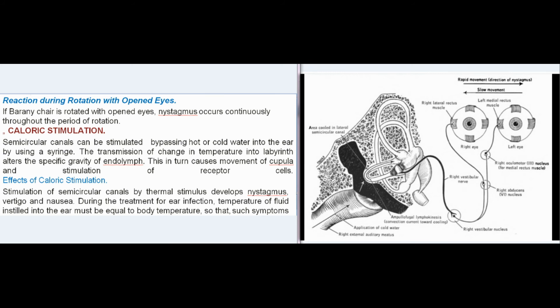Caloric stimulation: semicircular canals can also be stimulated by passing hot or cold water into the ear using a syringe. The change in temperature alters the specific gravity of the endolymph, causing movement of the cupula and stimulation of receptor cells. Effects include nystagmus, vertigo, and nausea. During treatment for ear infection, the temperature of fluid instilled must equal body temperature to avoid these symptoms.